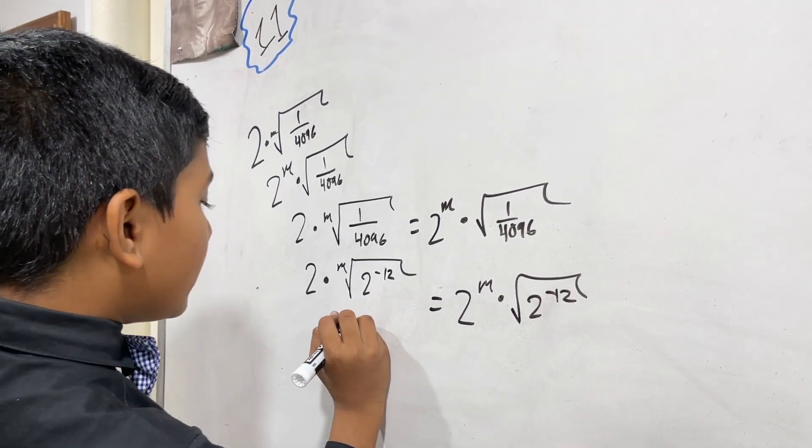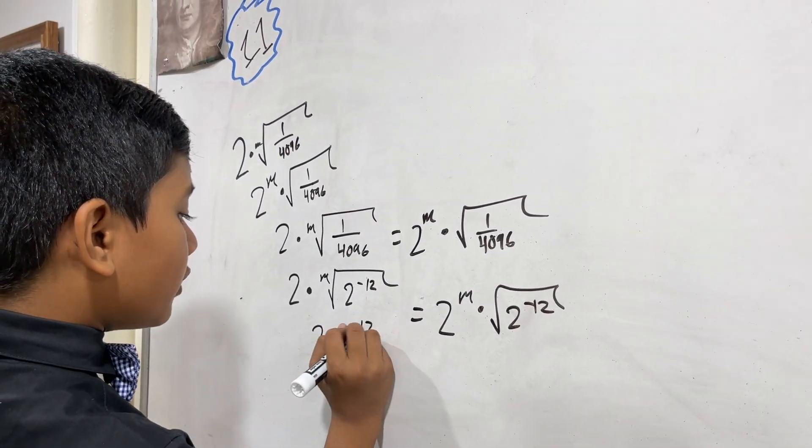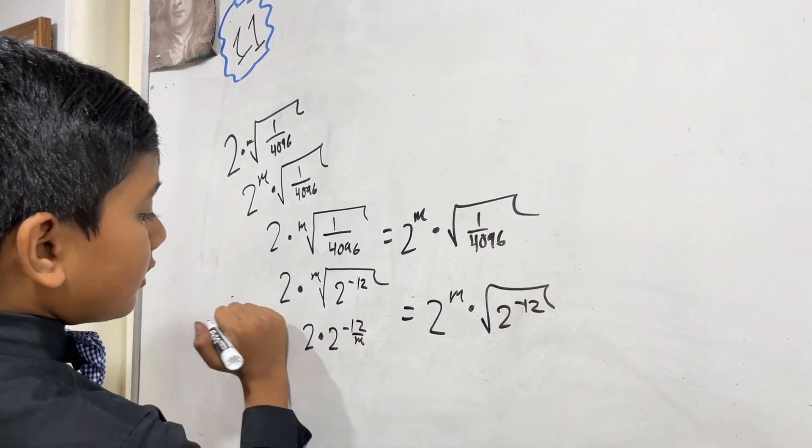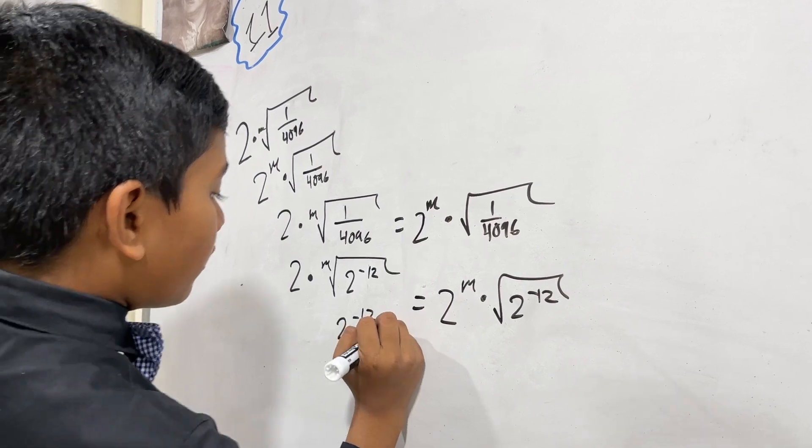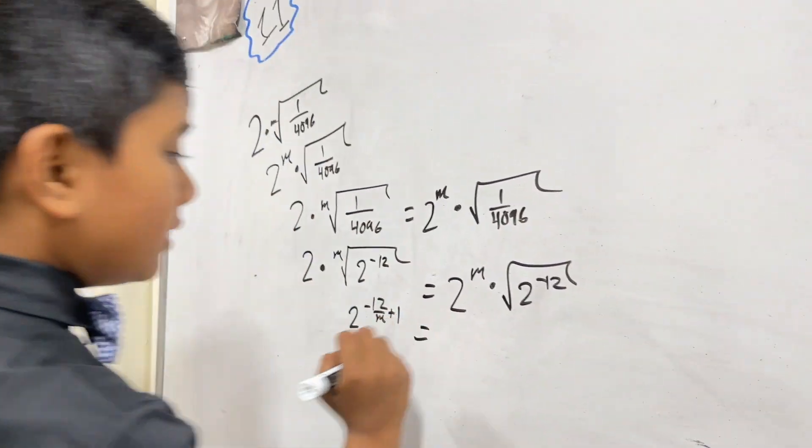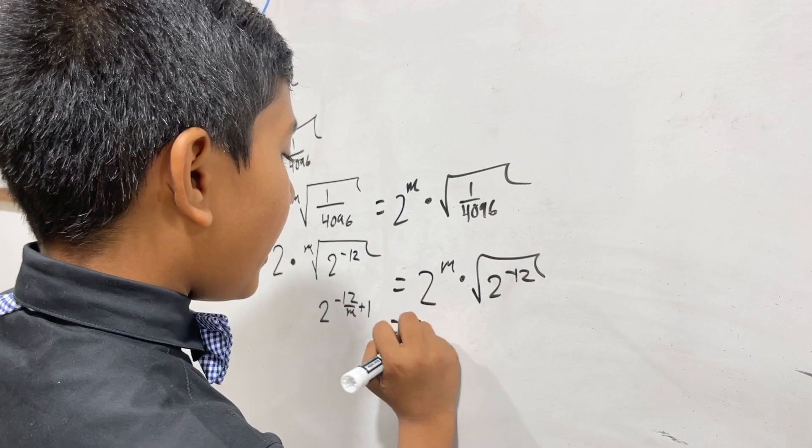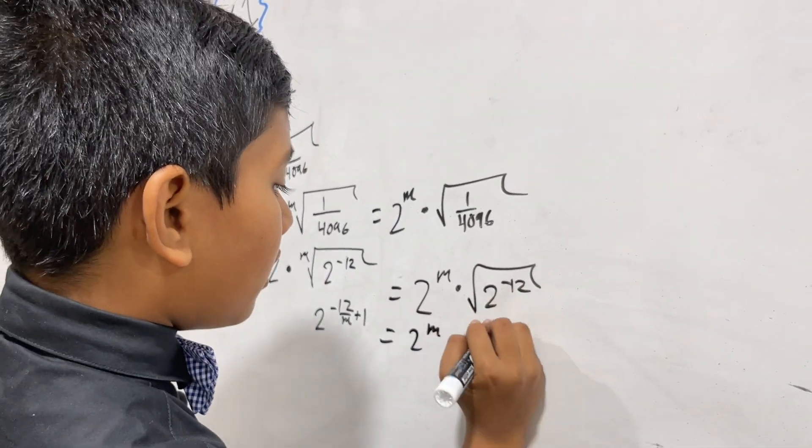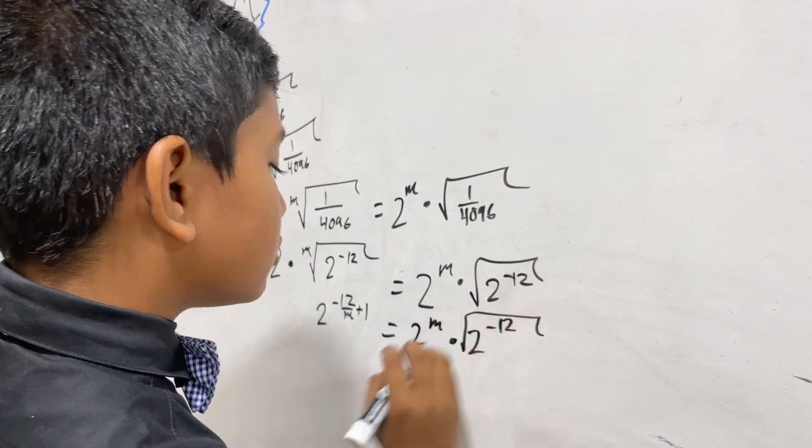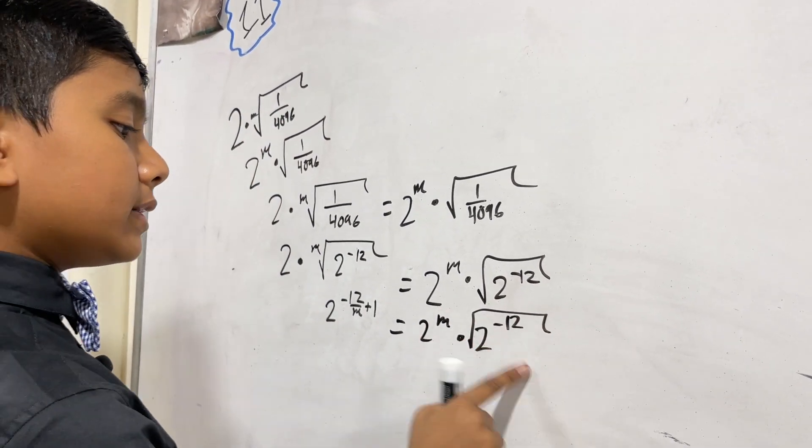Now, this is 2 to the minus 12 over m, which would be 2 to the minus 12 over m plus 1, which is equal to 2 to the m times 2 to the minus 12 square rooted. And the square root is a power to the half.